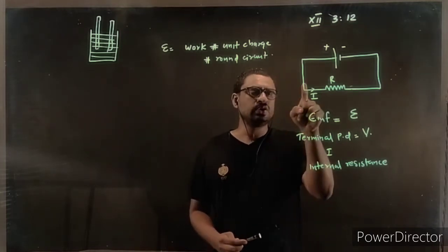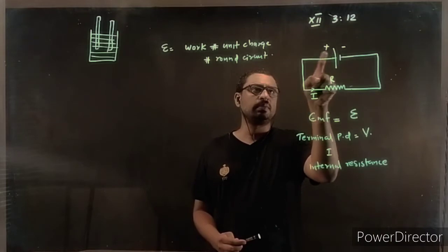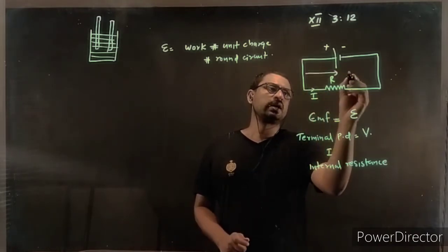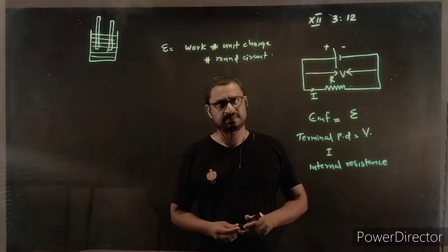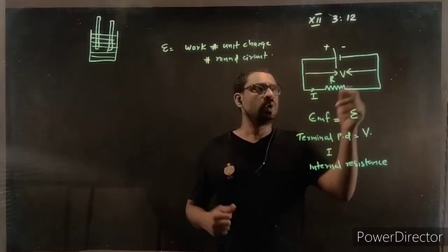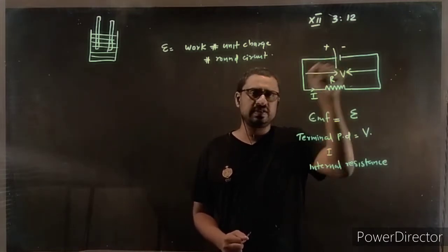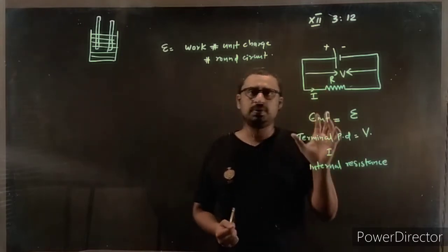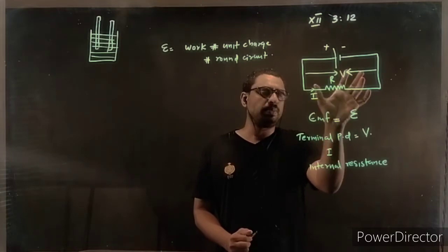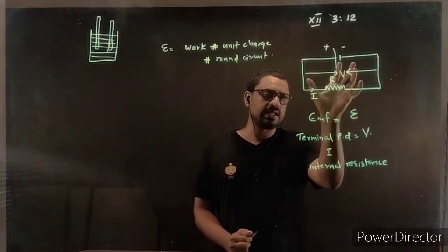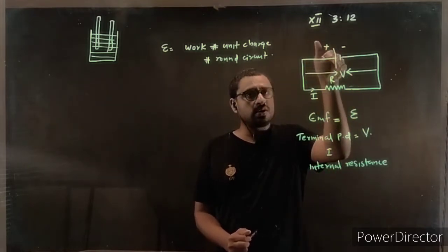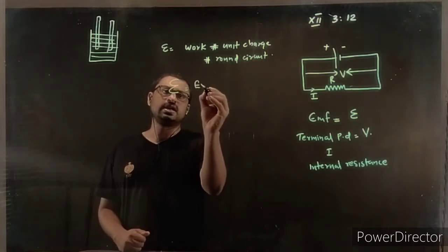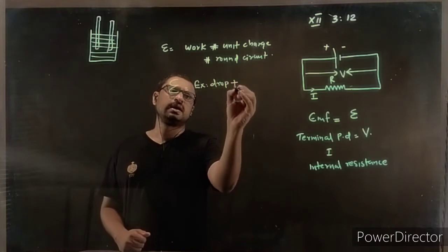EMF consists of two parts. One is the work done across the external resistor — the potential drop across the outside resistor — which we call potential difference. The other part is the work required inside the cell, called the internal drop. So EMF is composed of external drop plus internal drop.